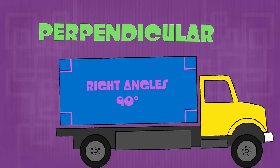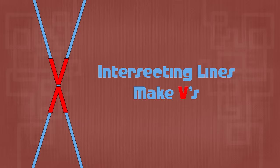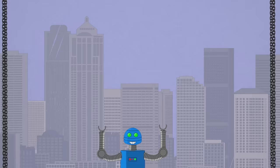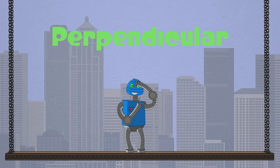Parallel lines never meet. Intersecting lines may feast. Perpendicular lines meet at 90 degrees. Put your hands in the air with me. Parallel, Intersecting, Perpendicular — they're rectangular.